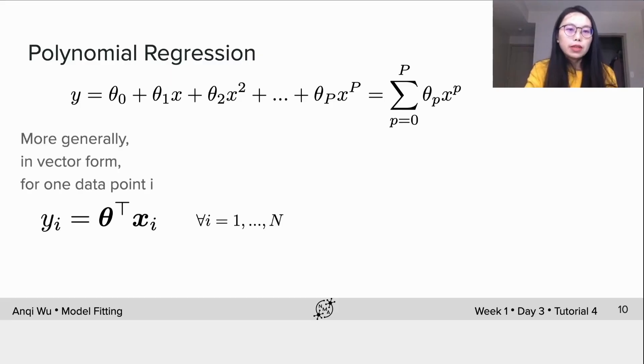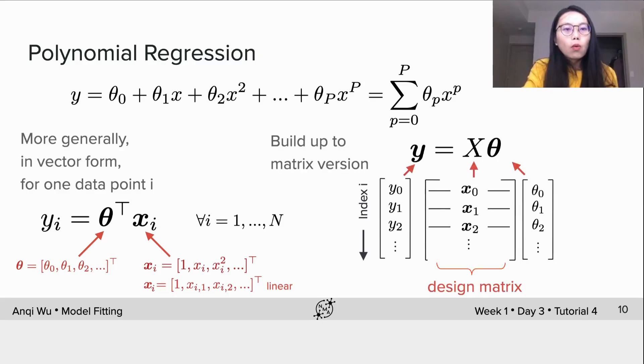More generally, we can write the vector form for one data point as this. The vector theta is the same, but the vector of x is 1, x, x squared, x to the third power, and etc. Compared to the linear model, x has different values, x has different elements x1, x2, and x3. And the matrix version is the same as the linear model.